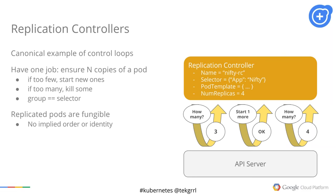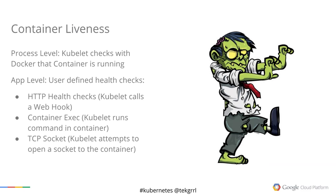Container liveness: when the replication controller checks to make sure the right number are running, what does that actually mean? We need the notion of liveness — is a container within a pod running? By default, Kubernetes checks at the process level with Docker. But at the application level, we can also have user-defined health checks. These could be HTTP health checks where the kubelet calls a webhook URL, container exec where the kubelet runs a command in the container, or TCP socket where the kubelet attempts to open a socket to the container.